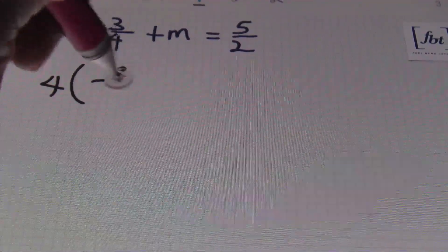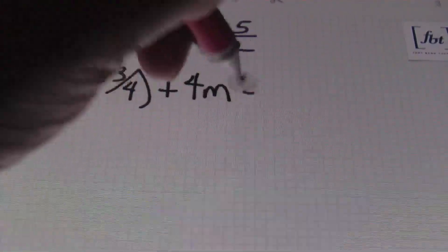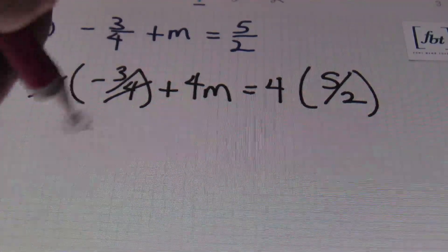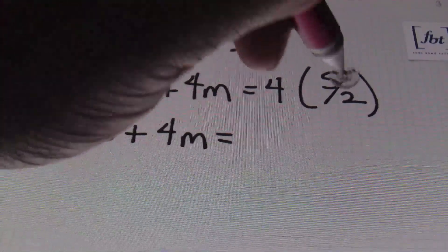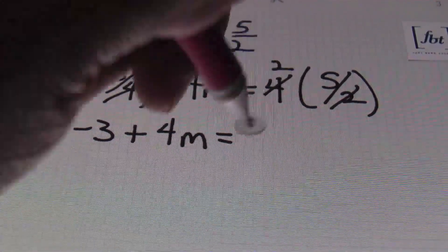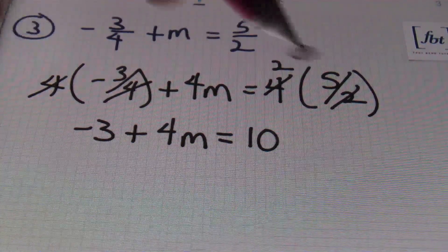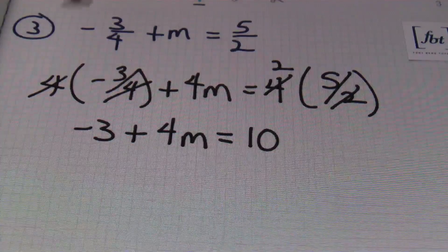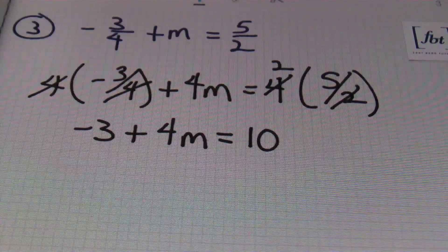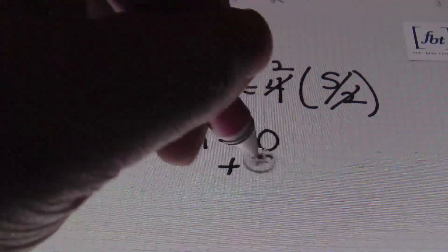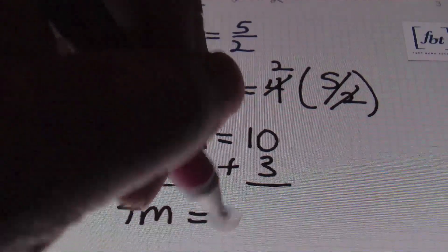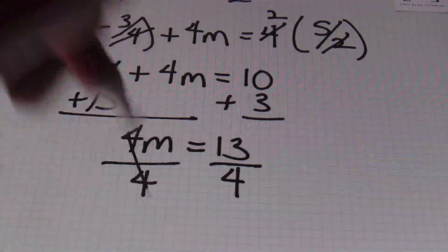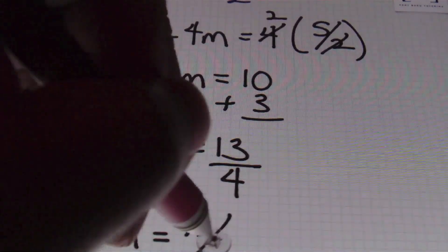Multiplying each term by four: four times negative three-fourths plus four m equals four times five-halves. Simplifying, I'll be adding three to both sides of my equal sign, which gives me four m equals 13. Once I have this, I'm going to divide both sides by the coefficient in front of the variable, which is four. Four's cancel out to leave me with m equals 13-fourths.